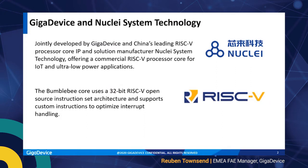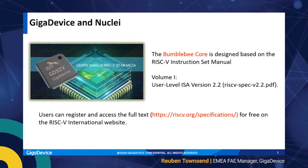Although the RISC-V ISA is free and open source, expertise and costs are required in the design and layout of the silicon for the microcontroller. GigDevice, who are actually a memory architect company, partnered with Nuclei Systems Technology, a leading RISC-V core IP company in mainland China. Together they developed and commercialized the core, named the Bumblebee core.